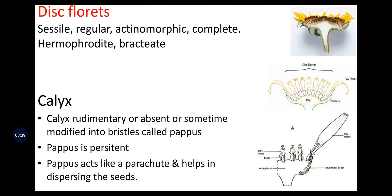Disc florets are sessile, regular, actinomorphic, complete, hermaphrodite, and bracteate. In disc florets, the calyx is rudimentary or absent, or sometimes modified into bristles called pappus. Pappus is persistent. Pappus acts like a parachute and helps in dispersing the seeds. Note that in ray florets there was no androecium.